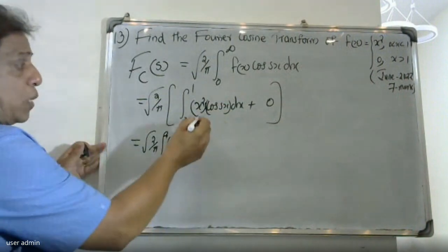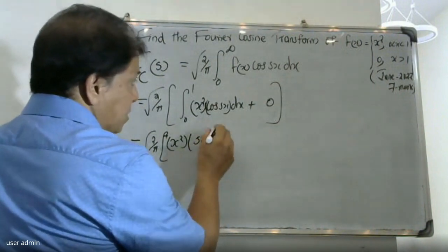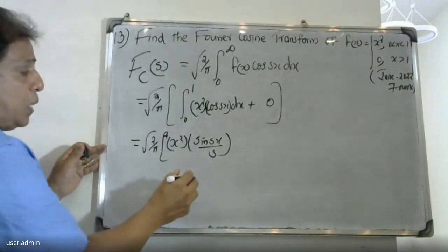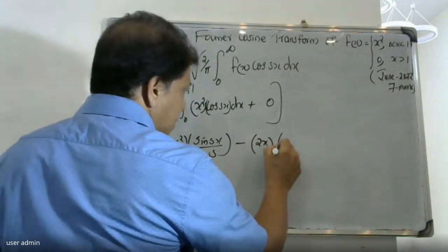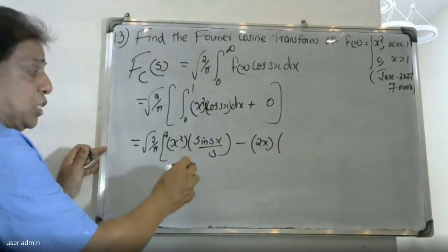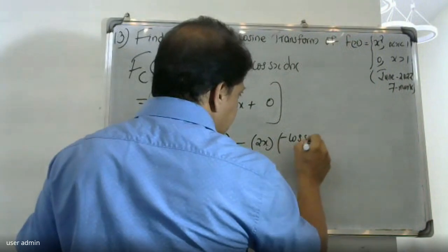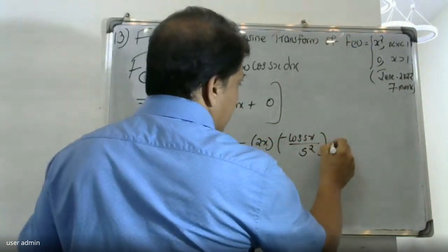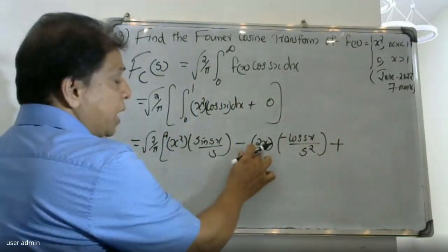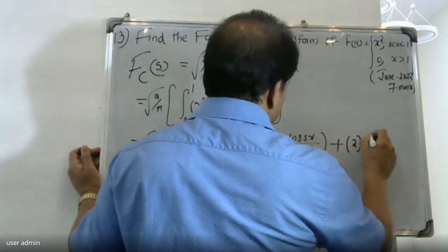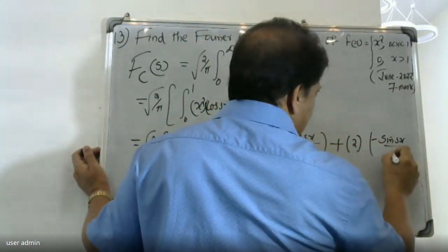Integral of cos(sx) gives sin(sx) divided by s. Applying integration by parts gives: sin(sx)/s, minus cos(sx)/s², plus 2x times sin(sx)/s², minus cos(sx)/s², minus sin(sx)/s².